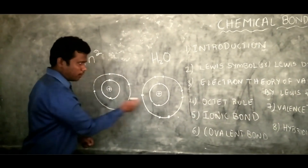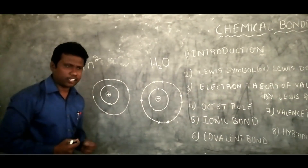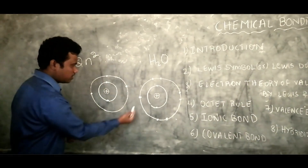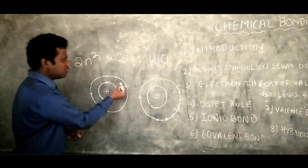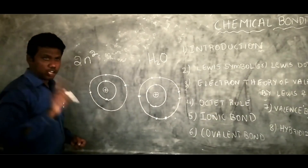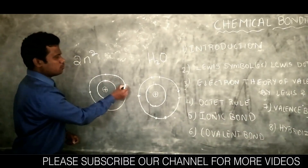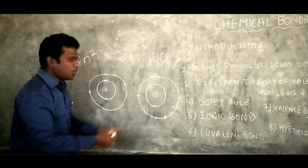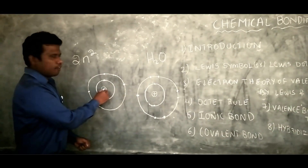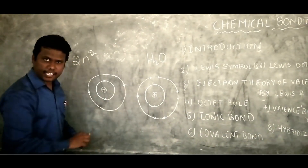Once we bring two atoms close to each other, the nucleus of the second atom will try to attract the electrons present in the outer shell — the valence electrons — of the first atom, because positive and negative always attract, just like north and south poles of a magnet. Similarly, the nucleus of the first atom will try to attract the electrons in the outer shell of the second atom.